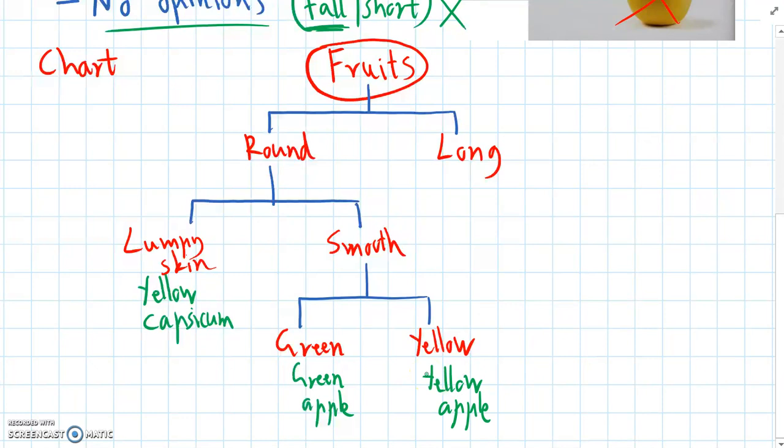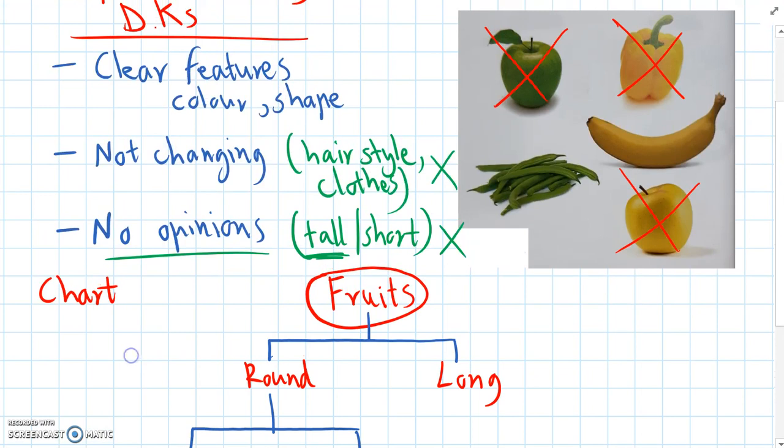Alright, so we've classified all of the round fruits. Now we just need to classify the two long fruits, which are the banana and the beans.